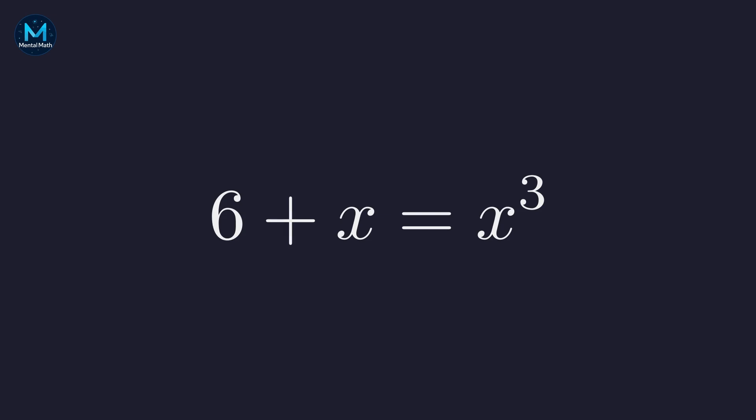Let's rearrange this into standard polynomial form by moving everything to one side. Subtracting x and 6 from both sides gives us x cubed minus x minus 6 equals 0.